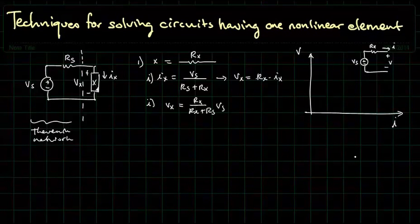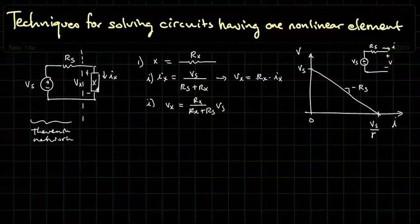And what we find is that, of course, at zero current, we get Vs, and it's a straight line with a slope of minus Rs. That should be Rs, not Rx. And a y-intercept of Vs over Rs, which we would call our short circuit current.